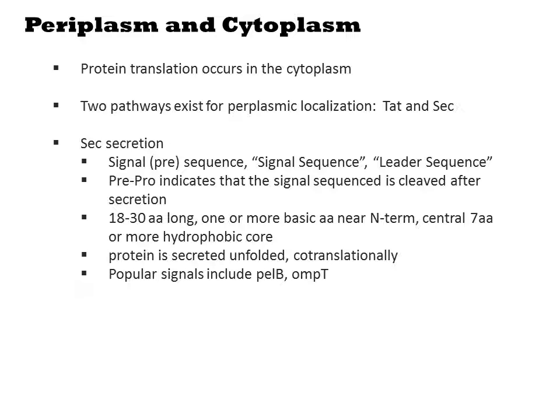If a protein just contains a pre-sequence, it will remain anchored into the membrane after translation. If it has a pre-pro sequence, it will be proteolytically cleaved off, releasing the protein to the periplasm. During export, the protein is in an unfolded state and is often secreted coincident with translation. Popular parts for pre-pro sequences that you'll find in many common expression systems are the PEL-B and OMP-T leader sequences.